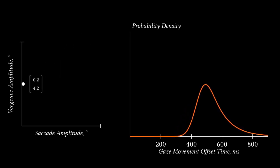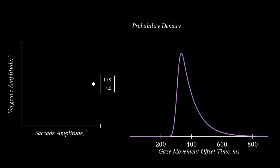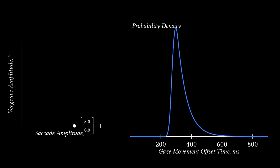Our model densely interpolates between observed data from our user study to predict the completion time of a combined movement. This visualization demonstrates how the probability distribution of gaze offset times change as the amplitudes of movement are varied.